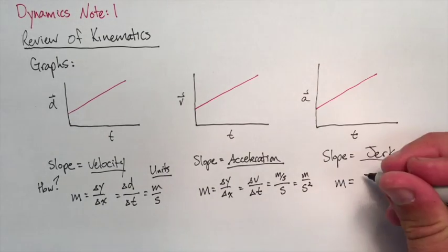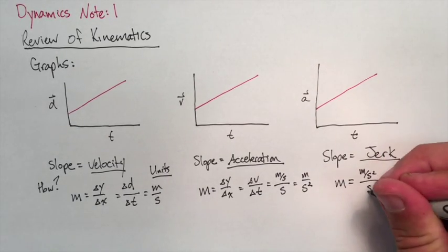Slope of an AT graph, change of acceleration over time is a jerk. If we check those units, it's meters per second cubed.